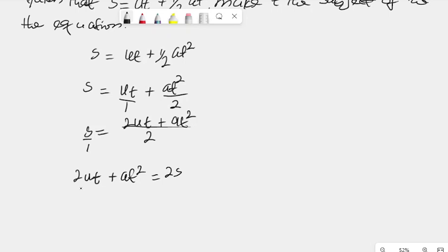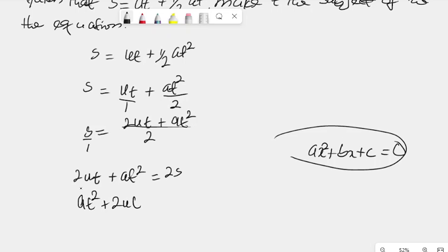So, rearranging this to form a quadratic equation, we'll first of all bring this term that has T squared first, because a general form of quadratic equation is AX squared plus BX plus C equal to 0. So, I have AT squared plus 2UT. Now, when these 2S crosses the sign of equality and become minus 2S equal to 0.